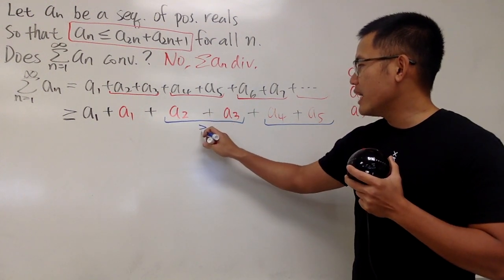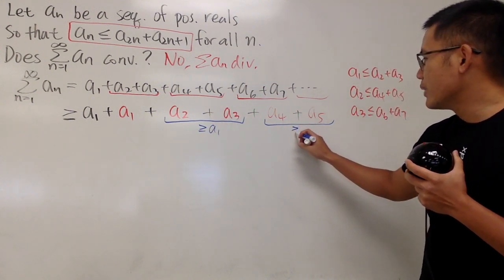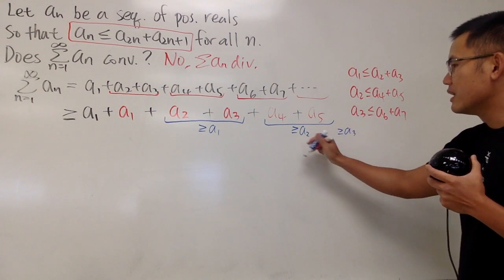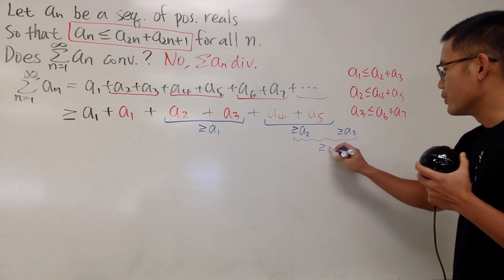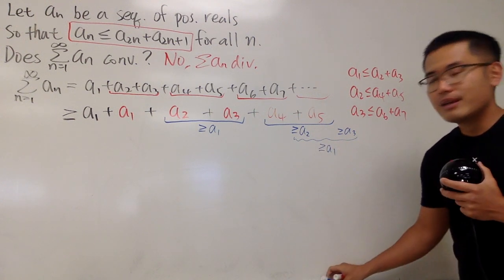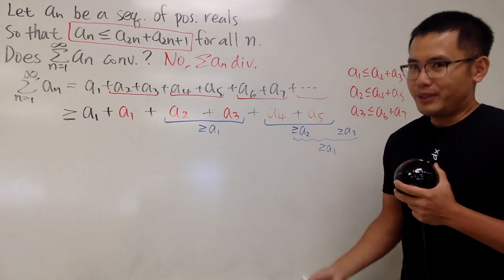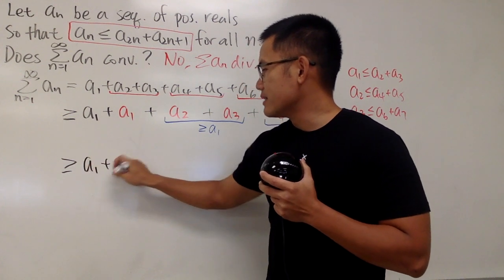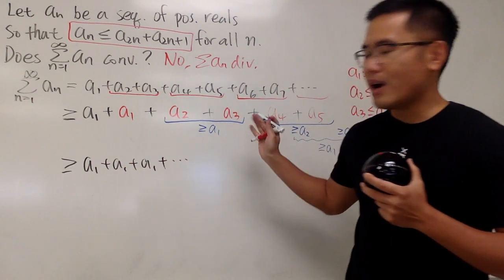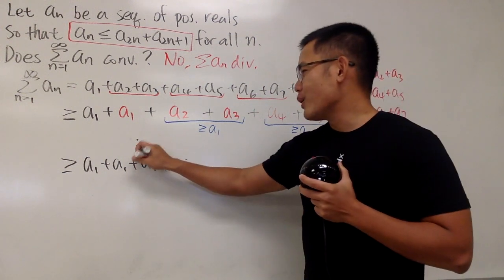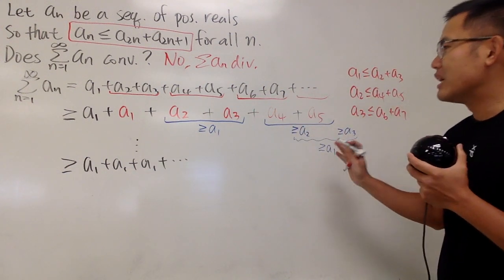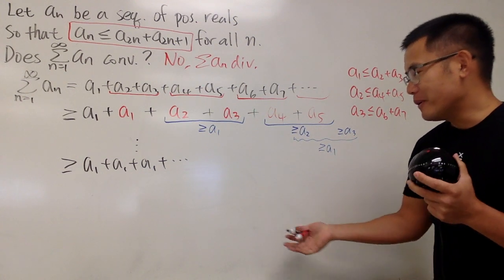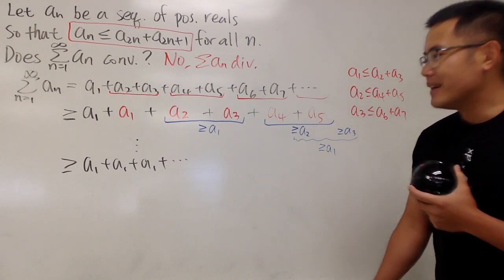This right here is going to be greater than or equal to a1, and this right here is greater than or equal to a2. And the next one is going to be greater than or equal to a3. And together, here, it's going to be greater than or equal to a1 again. So, in fact, I think this is pretty clear now. We can just come here and say, all this right here is greater than or equal to just a bunch of a1 plus a1 plus a1 plus dot dot dot, forever. And, in fact, I don't really know the official rule. I think when you show enough work like this, maybe it's enough to present this as your solution. Right? Anyway,